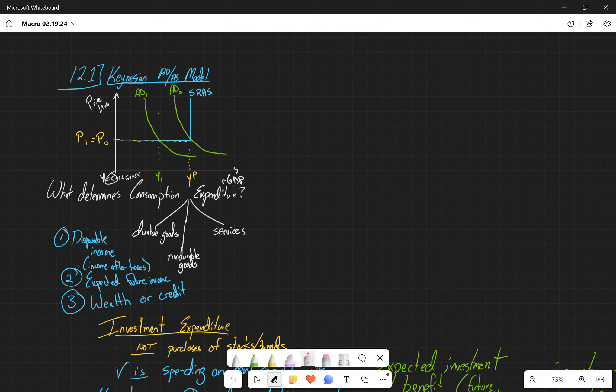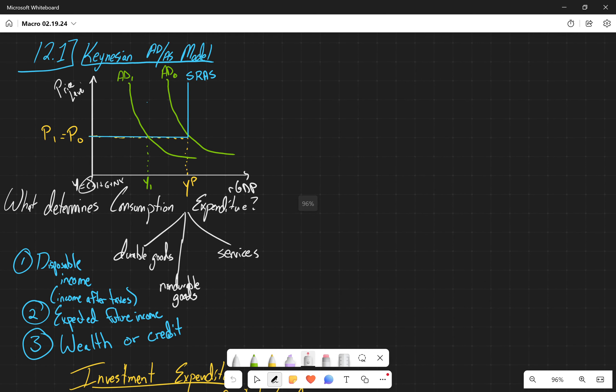We talked last class about the Keynesian model and how anything below YP - Keynes had the notion that anything below the potential GDP in the short run is going to cause no impact on prices. That's why it's horizontal, but it's going to cause significant impact on the real GDP. So if we are at the YP and there is a downturn and AD0 goes to AD1, there's going to still be the same price level but there will be significantly lower economic activity.